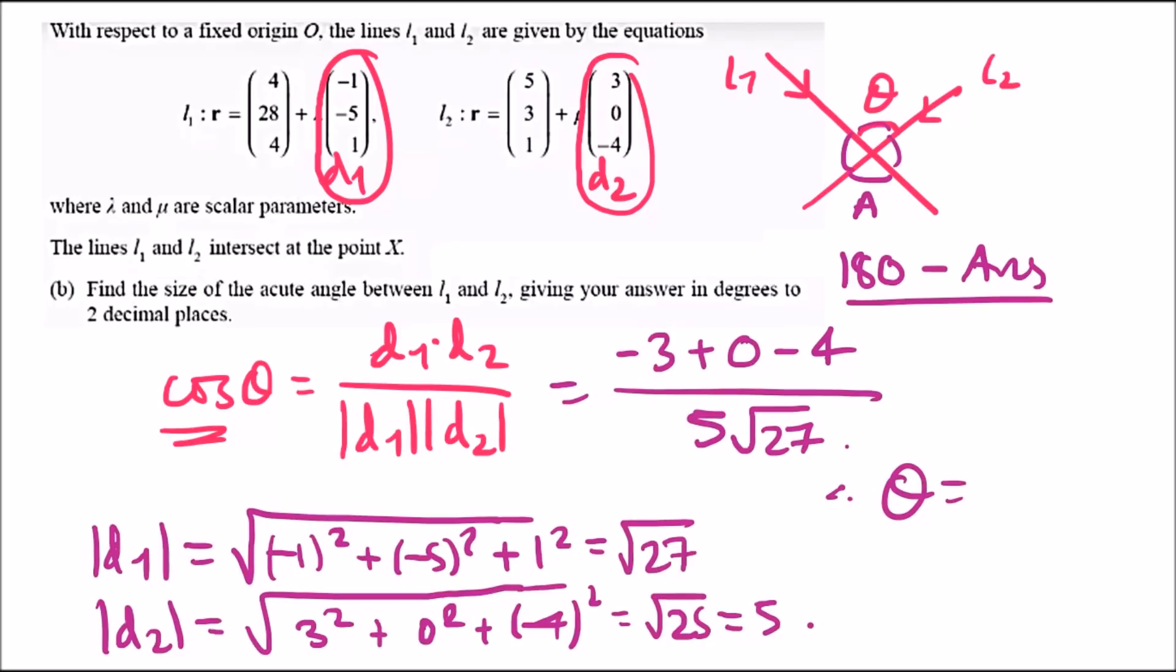Solving for cos theta, when you take cos inverse of minus seven over five root 27, you get 105.63 degrees. Because it's bigger than 90, we need to find the acute angle. So 180 minus 105.63 gives us the acute angle of 74.37 degrees.